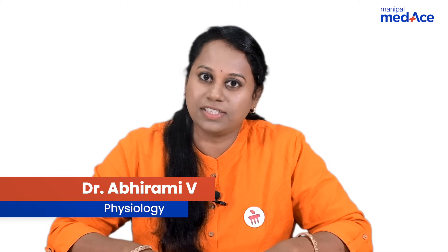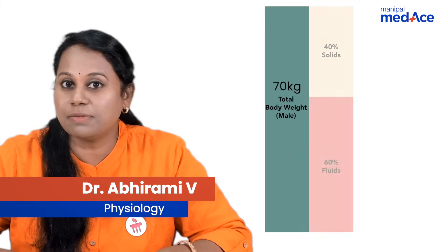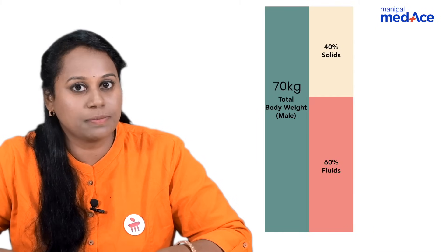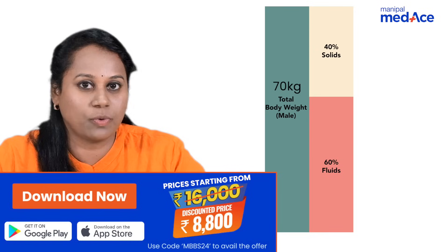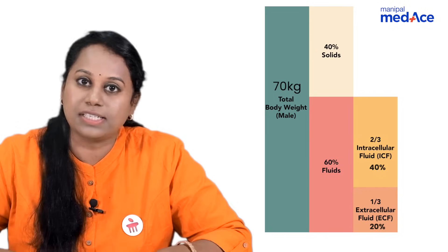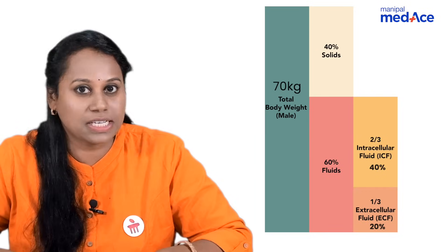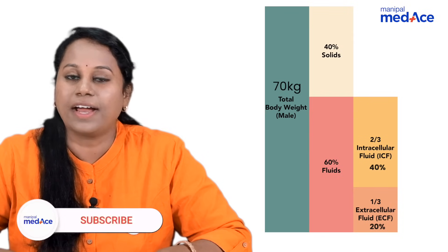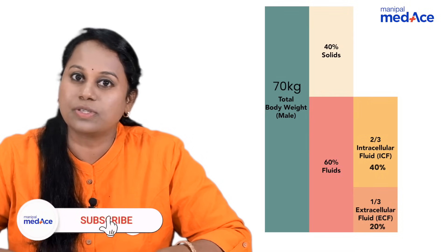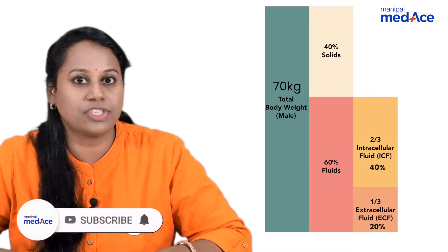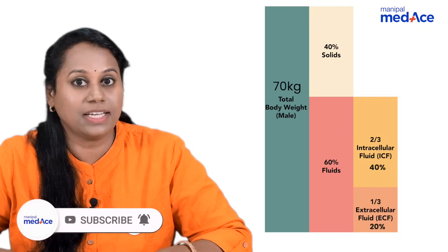An average adult male of 70 kg has 60% total body water. How is this 60% total body water divided? Two-thirds goes to the ICF, intracellular fluid, which is 40%, and one-third goes to the ECF, extracellular fluid, which is 20%.